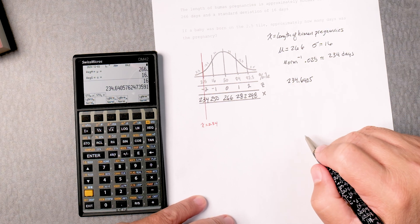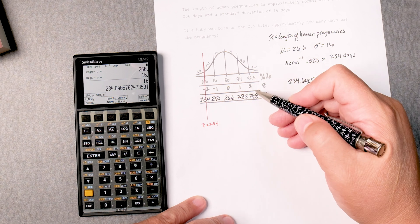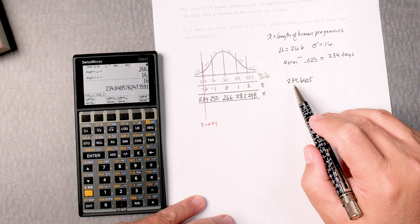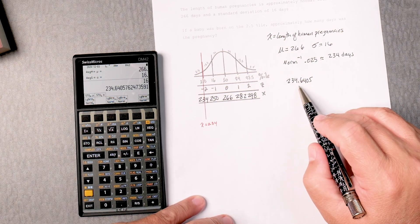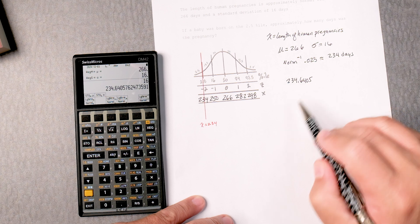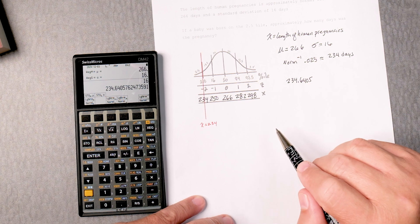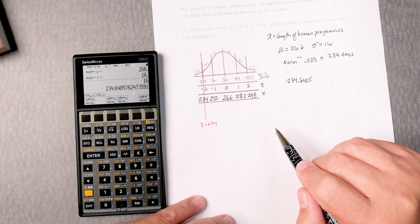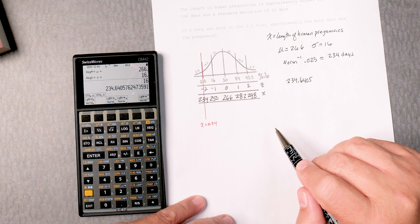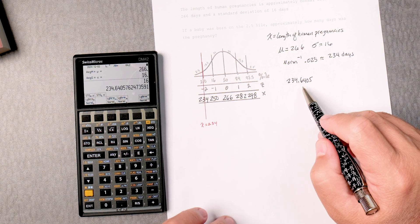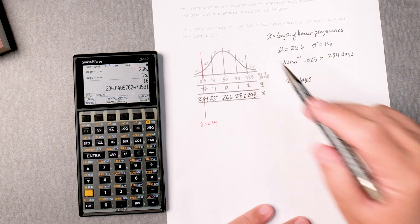Not bad for an estimate. 234.6405 days. That's approximately how many days at the 2.5 percentile.